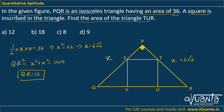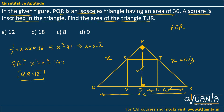Dropping a perpendicular from P onto QR at point O, it bisects QR since the triangle is isosceles. So OR = half of 12 = 6. In triangle POR, applying Pythagoras: PO² + 6² = (6√2)², which gives PO = 6.